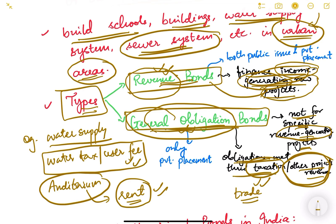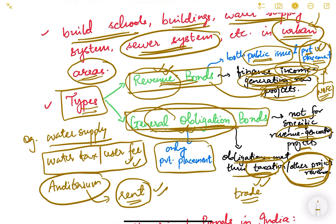Revenue bonds can be issued to both the general public and through private placement — meaning issued to a specific private company or big financial institution like an NBFC. Private placement means they are not issued in an open market to all people, but given to specific large financial companies. General obligation bonds, however, can be issued only through private placement, not to the general public. So the general public can invest only in revenue bonds of a municipality.